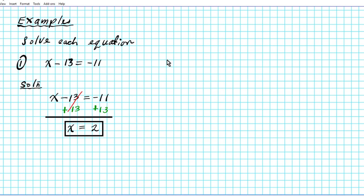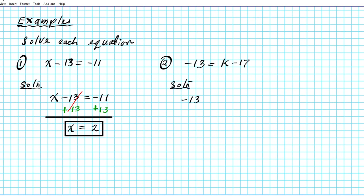Let's take a look at another example. What if we have negative 13 equals K minus 17? We have negative 13 equals K minus 17. We are subtracting 17, so we want to undo minus 17. The inverse of subtraction is addition, so we add 17 and apply that to both sides of the equation to preserve equality.